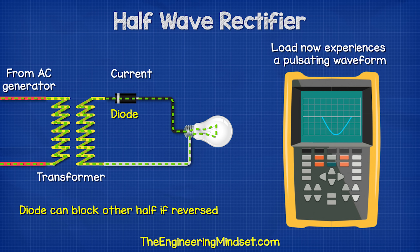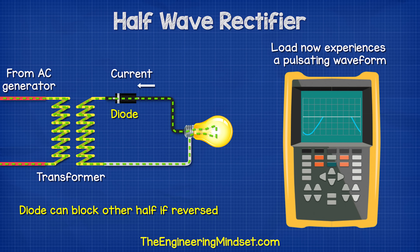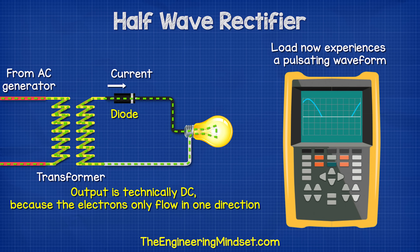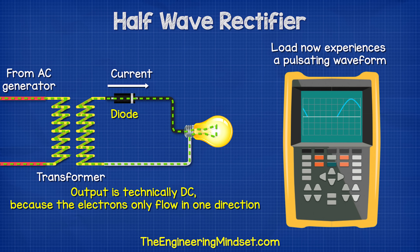We can reverse the diode to block the positive half and only allow the negative half. This is therefore a half-wave rectifier. The output is technically DC, because the electrons only flow in one direction.